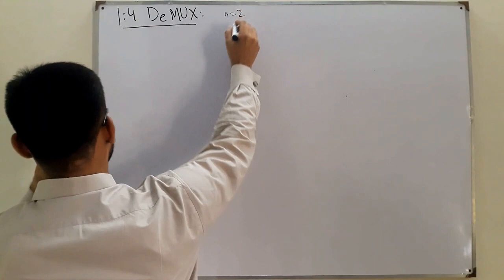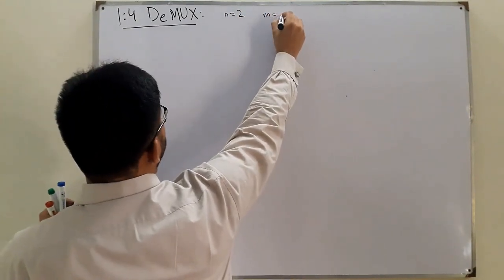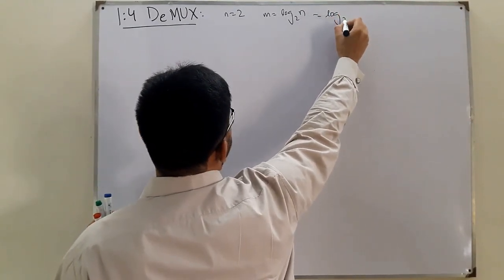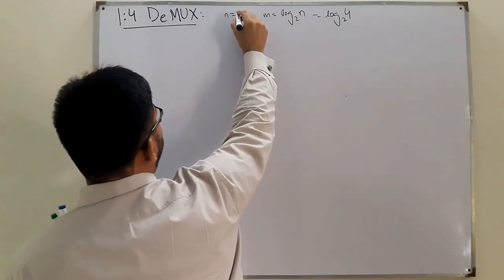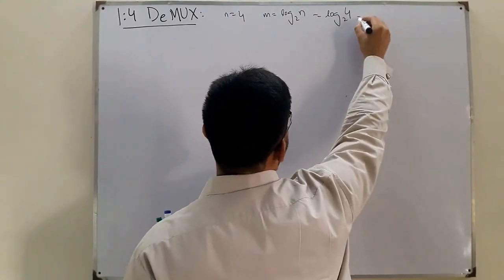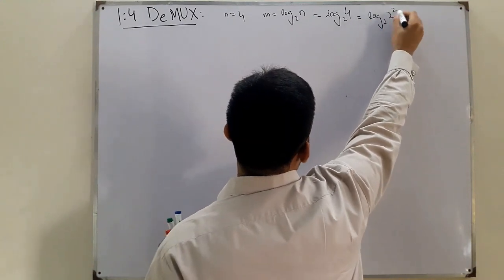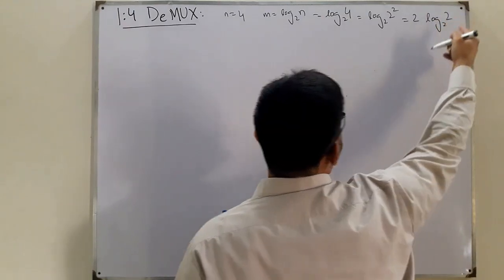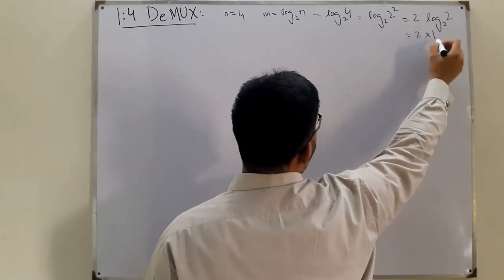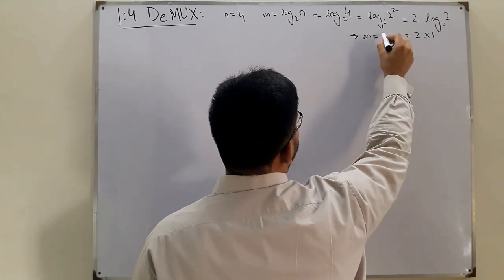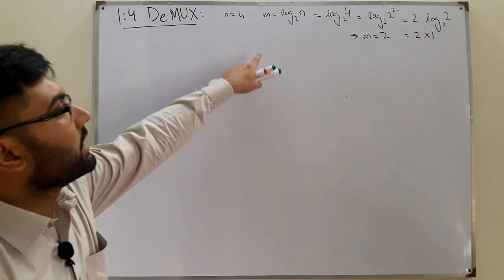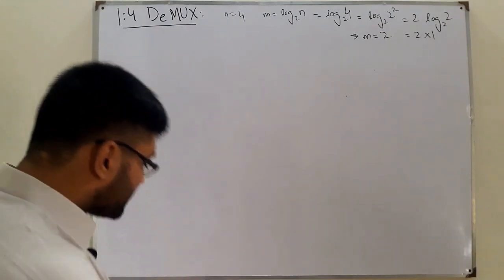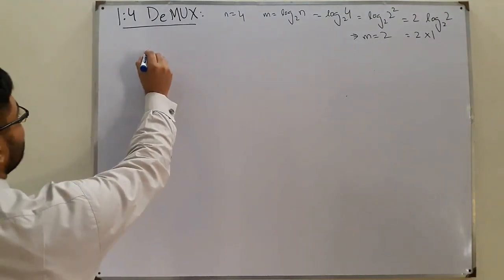n is equal to 4, so we know that m is equal to log base 2 of n, which means log base 2 of 4. We can write it as log base 2 of 2², bringing the 2 down, giving us 2×1, which implies the number of select lines is 2. I went through this quickly because you know it from your mathematics.